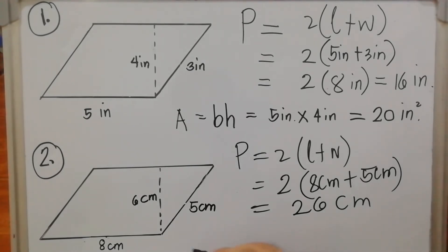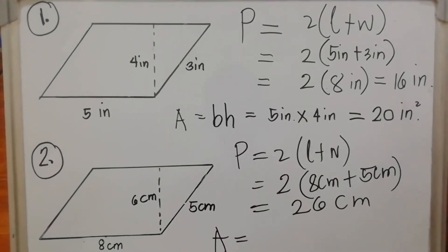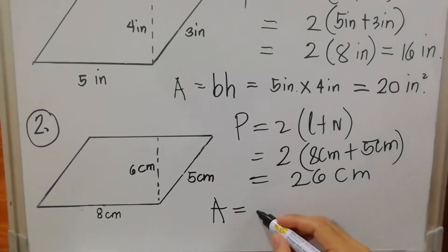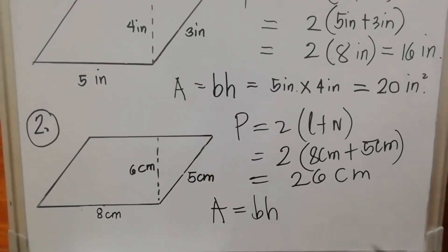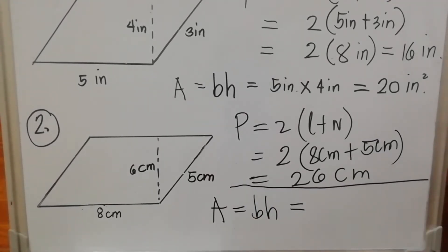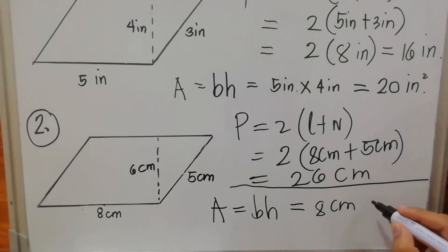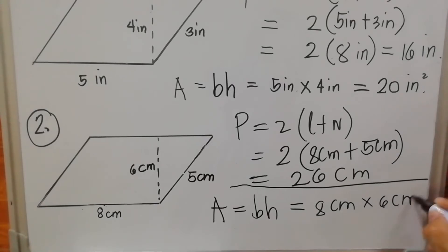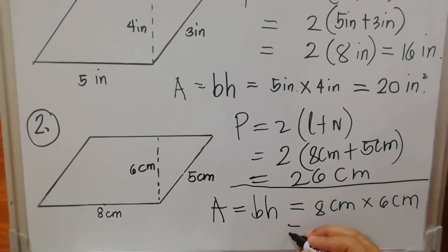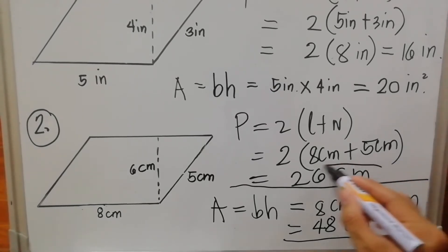For the area of example two: A = base × height. Base is eight centimeters and height is six centimeters. So: 8 × 6 = 48 square centimeters. That is our area, and 26 cm is our perimeter.